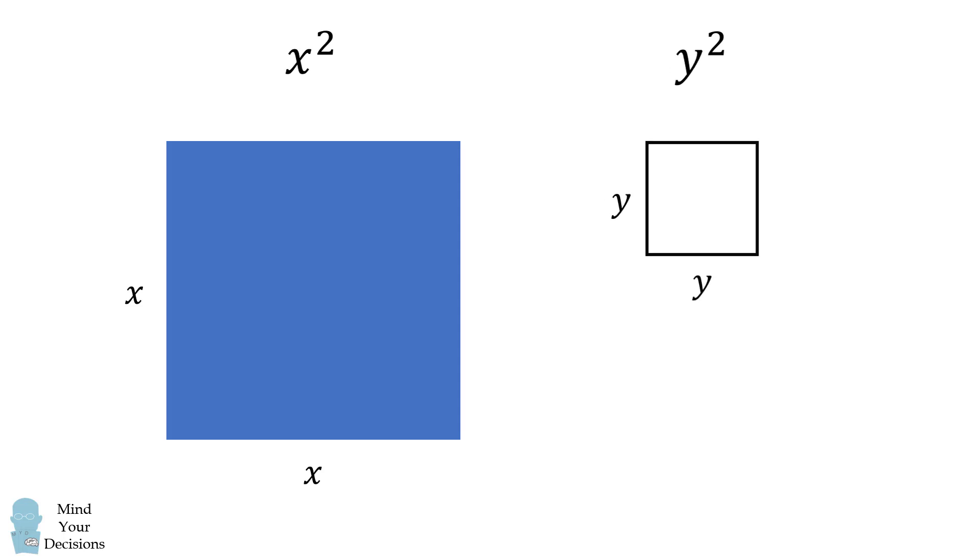If we subtract the smaller square's area from the larger square's area, we get the area x squared minus y squared. But we can also calculate the area in another way.